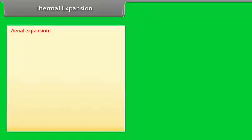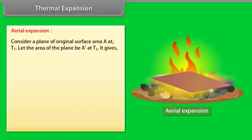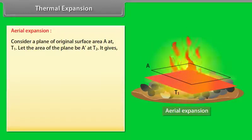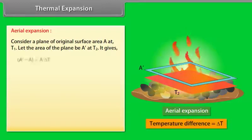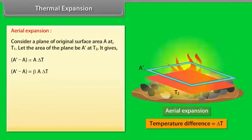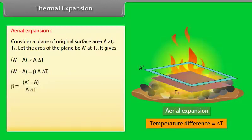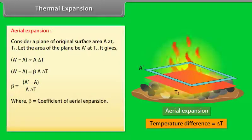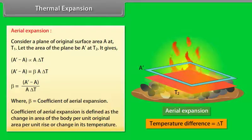Aerial expansion: Consider a plane of original surface area A at temperature T1. Let the area of the plane be A' at temperature T2. Then A' − A = βAΔT. The value of β = (A' − A)/(AΔT), where β is the coefficient of aerial expansion. It is defined as the change in area of the body per unit original area per unit rise in temperature.